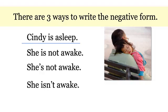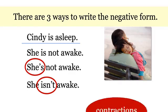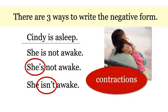These three sentences all mean the same thing. In the first sentence, you can see 'not': she is not awake. In the second sentence, we put 'she' and 'is' together to make 'she's.' In the third sentence, we put 'is' and 'not' together to make 'isn't.' Do you remember what these are called? Contractions.